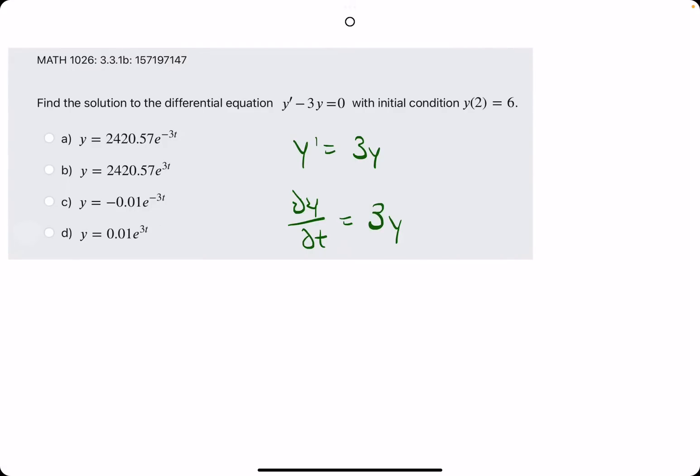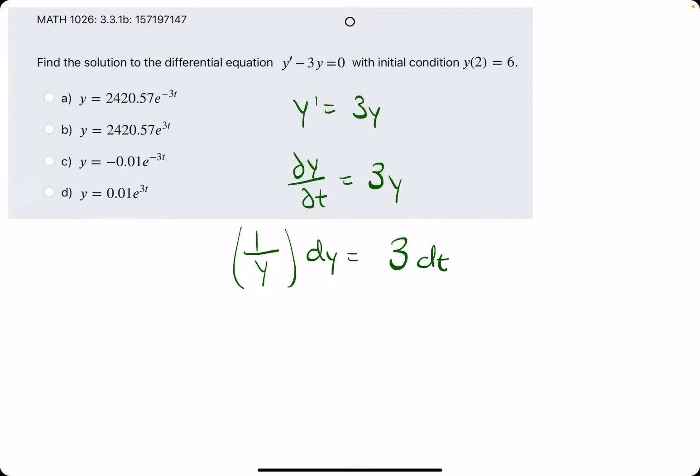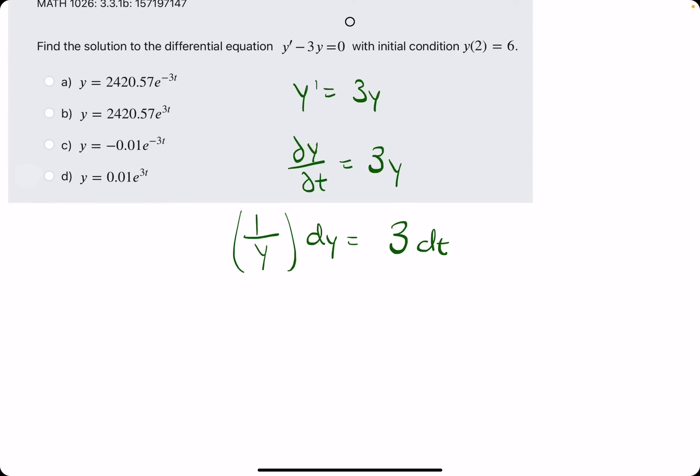We want to move the y term over. We'll go ahead and just do the one over y situation we usually do. We'll leave the dy. Let's go ahead and multiply the dt to the right side. So we'll go ahead and leave the three with the dt. If you wanted to, you could have divided by three y and then incorporated it over here. But personally, I think it's easier to leave it on the right side with the t's.